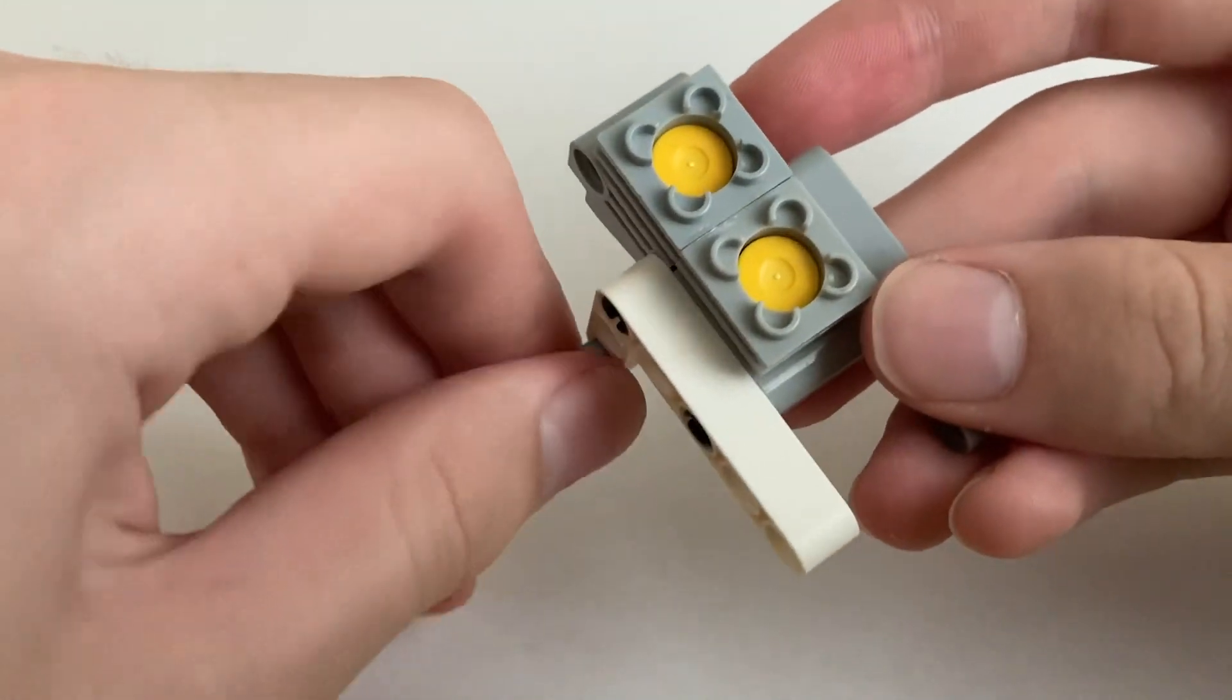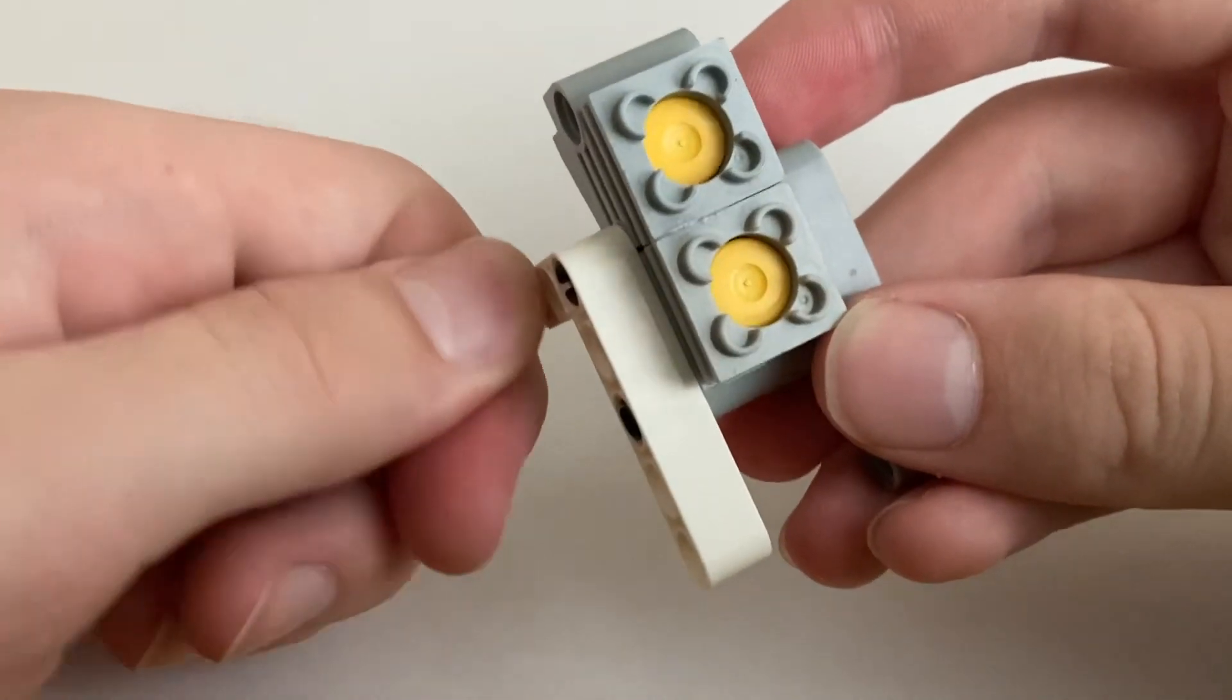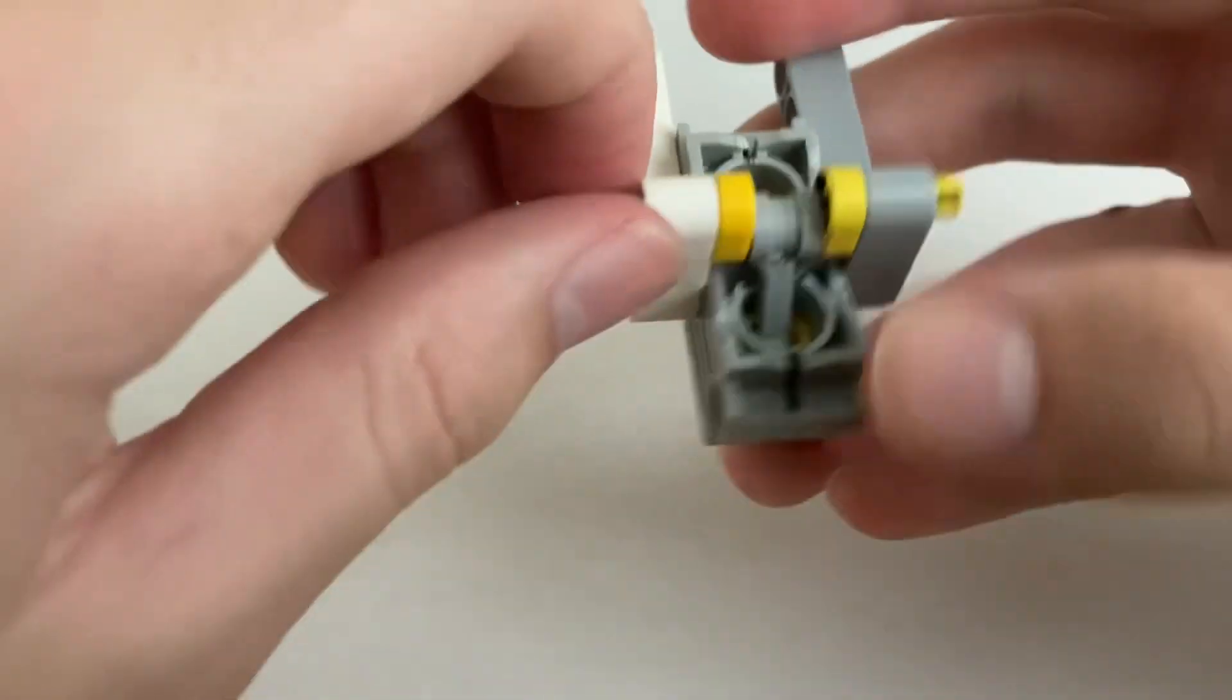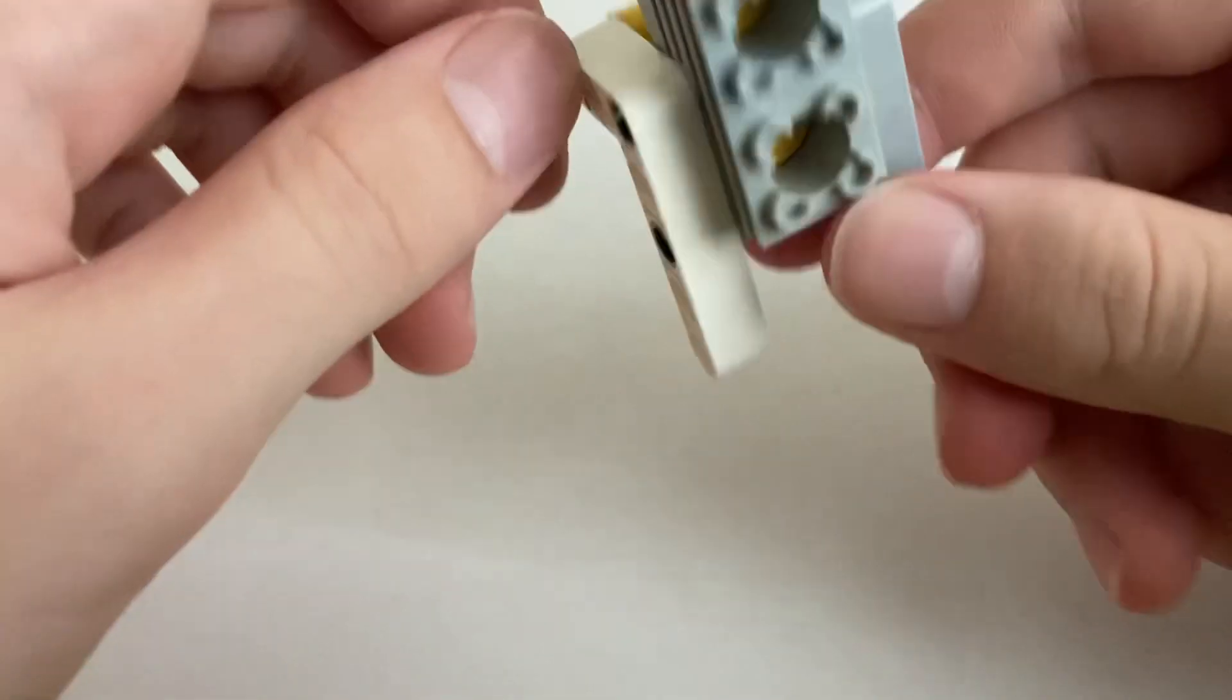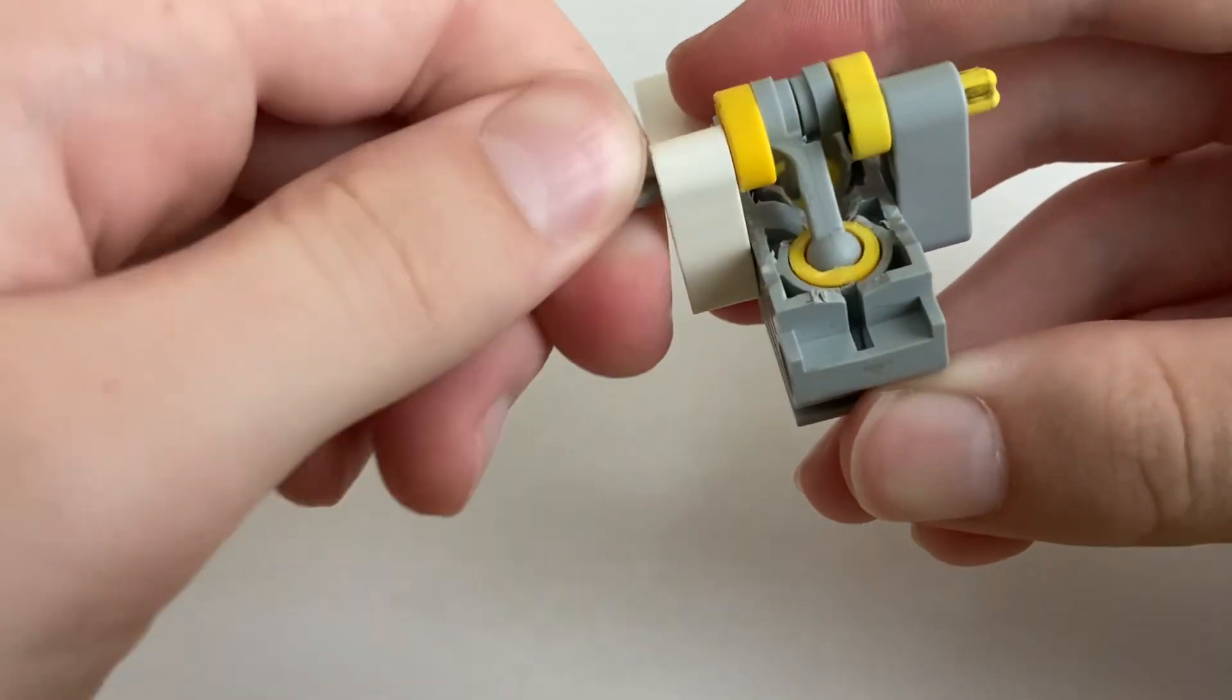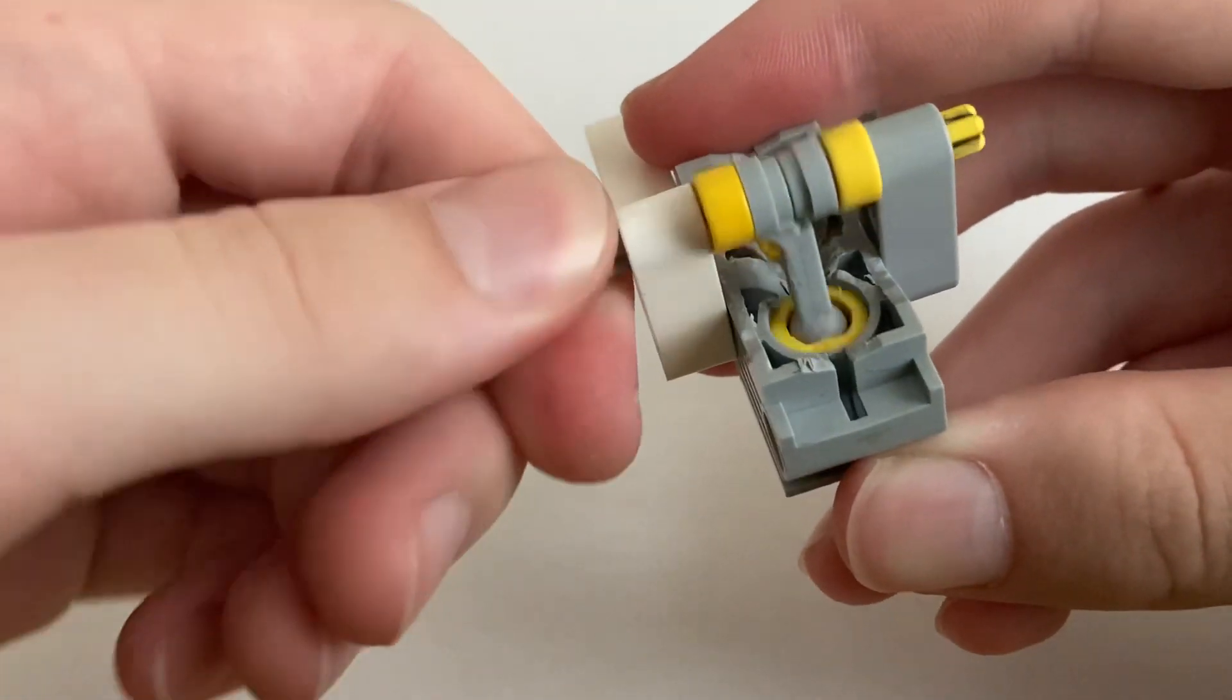When it turns, the engine does have some spots where there's lots of friction. Usually that's around the bottom dead center of each piston, so hopefully I'll be able to eliminate that on the final version of the engine.